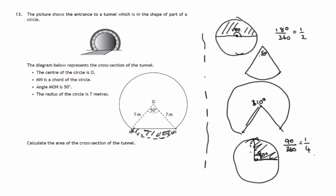So we're comparing, for instance, this minor sector would be 50 over 360, that fraction of the whole circle.